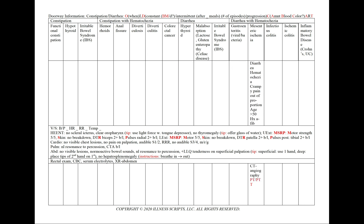In mesenteric ischemia, we'll see diarrhea, hematochezia, and crampy abdominal pain that is out of proportion to the physical exam. Classically, our patient will be greater than 50 years old with a history of atrial fibrillation. We'll include a CT angiography and a PT and PTT.